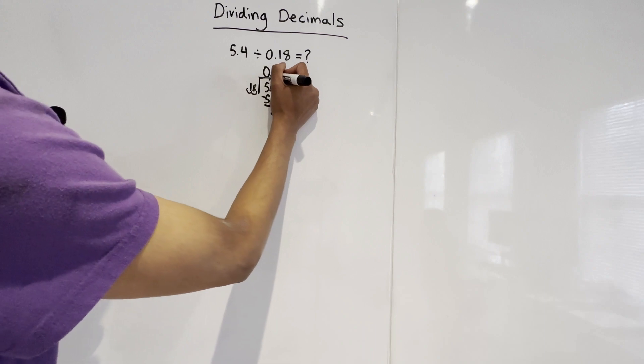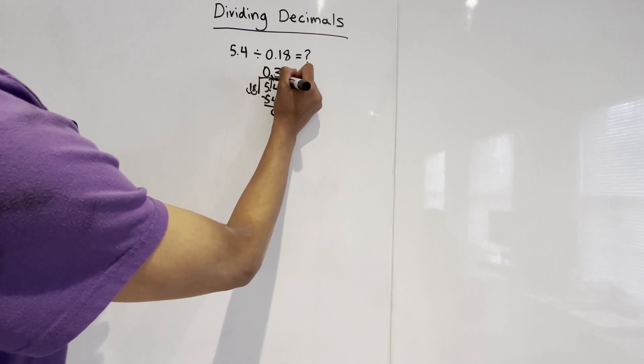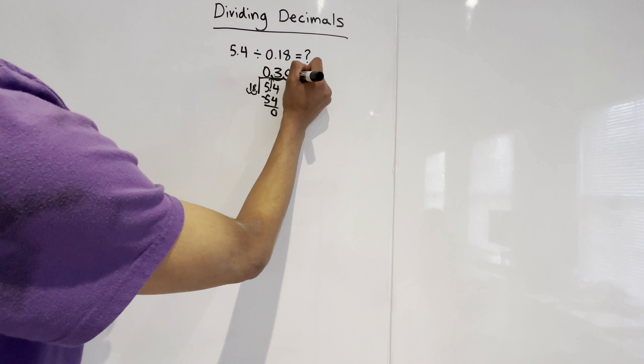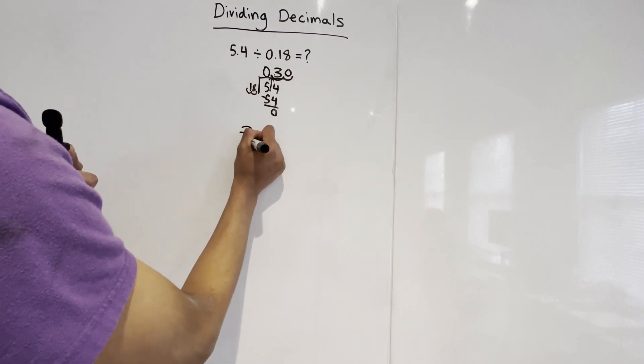So we actually move this decimal point two spaces to the right as well. And we add a 0 here. So our answer is 30.